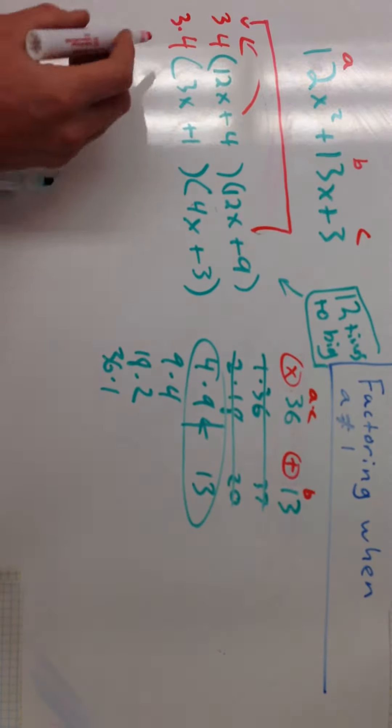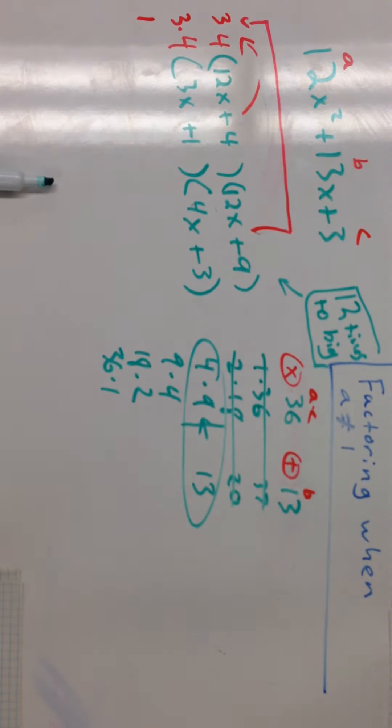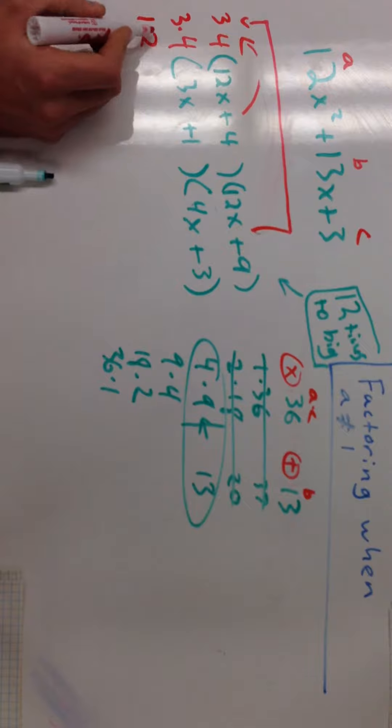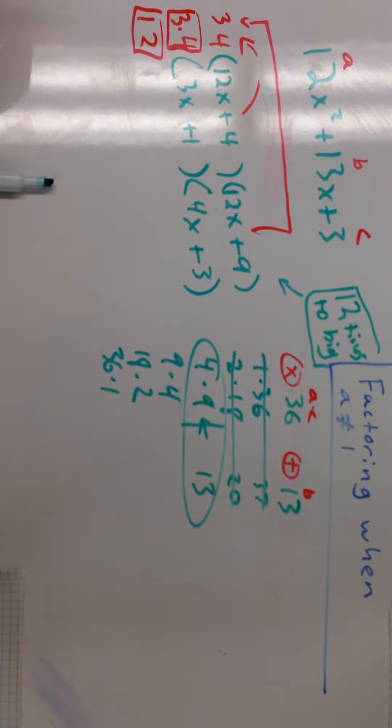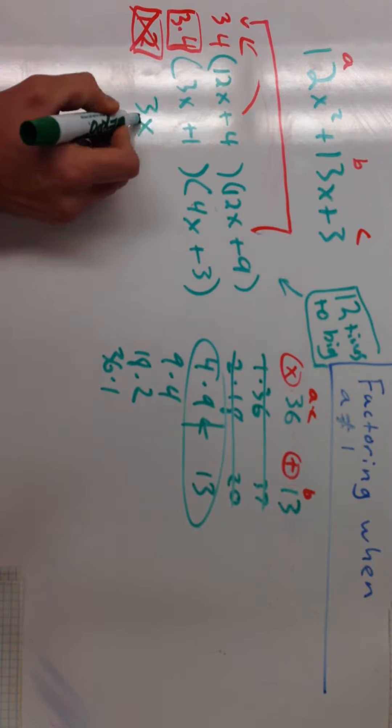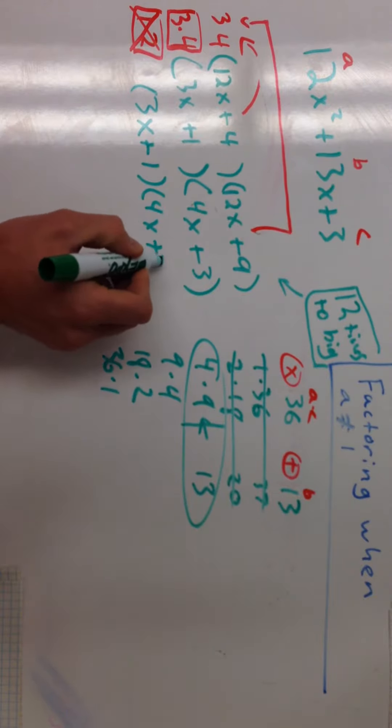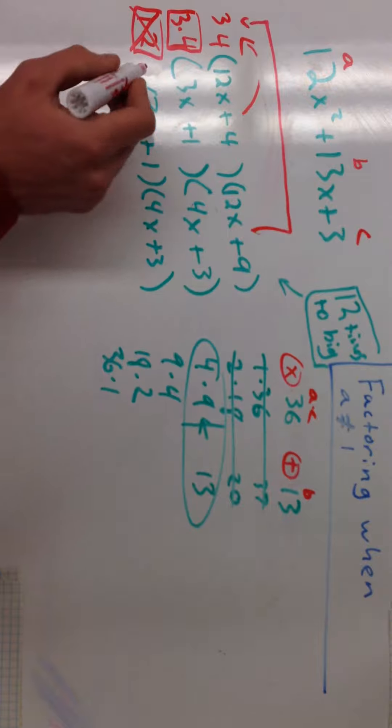Now, remember when I said that was 12 times too big? Now, out here, I have this extra 3 times 4, which is just 12. Well, I'm going to get rid of that to kind of fix it. So this right here is my final solution then, 3x plus 1 and 4x plus 3. So that's my final solution.